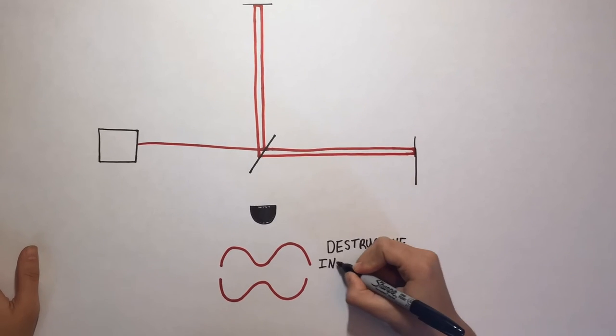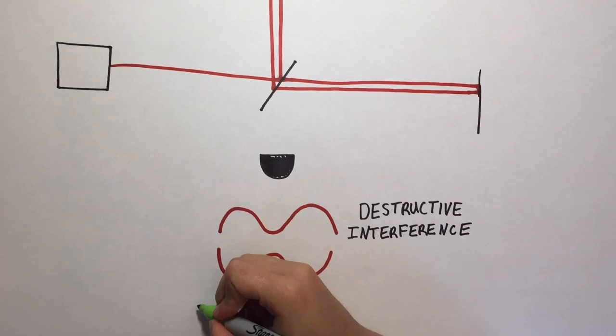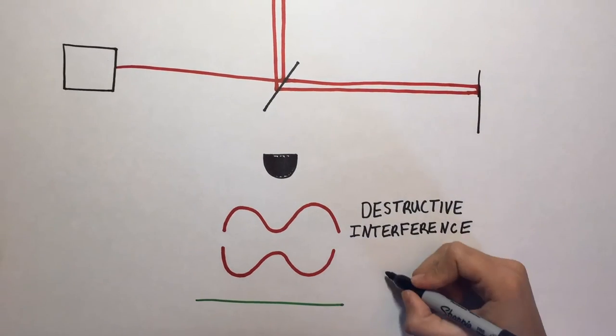Now, if the lasers travel exactly the same distance, they should create a type of interference called destructive interference. This means the light waves from the two lasers cancel out, creating no light.